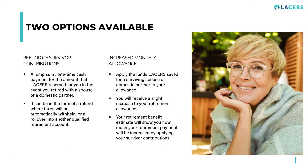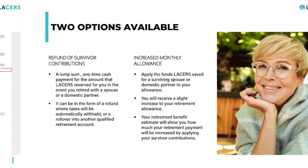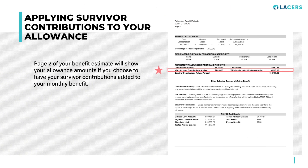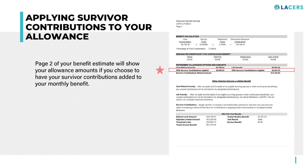You will have two options for these funds. The first option is to apply those funds to your monthly payment to slightly increase your retirement allowance. Your retirement benefit estimate details the increase in your retirement payment by applying your survivor contributions. To see the amount, refer to page two of your estimate in the retirement allowance options and amounts section and look for the line that reads with survivor contributions applied.